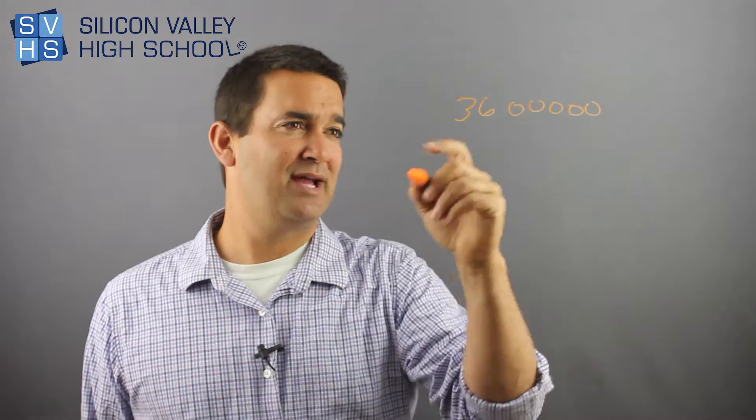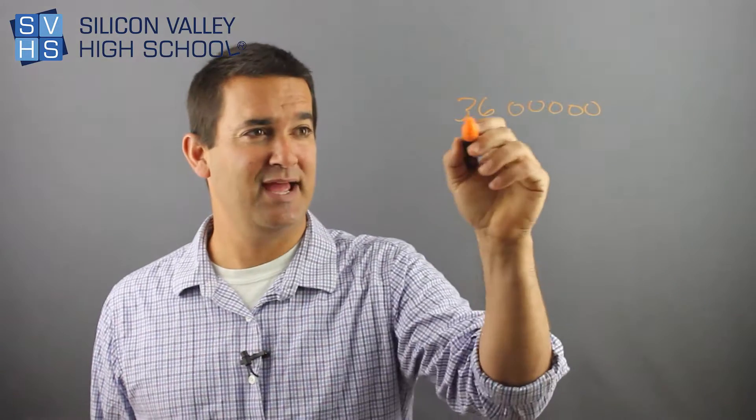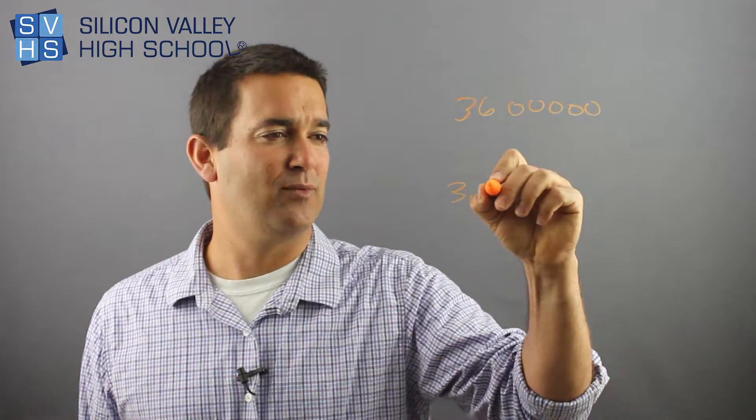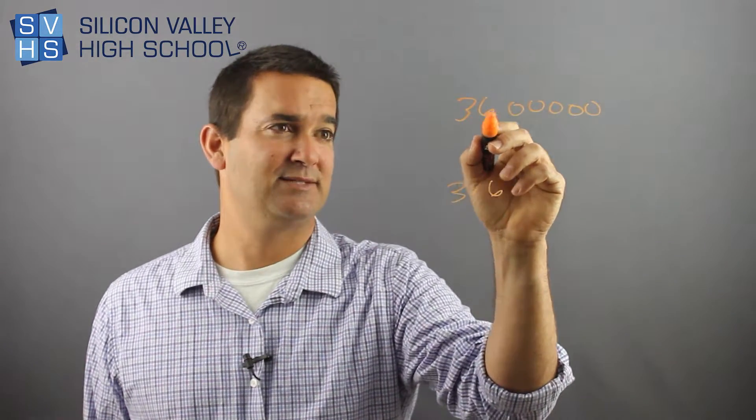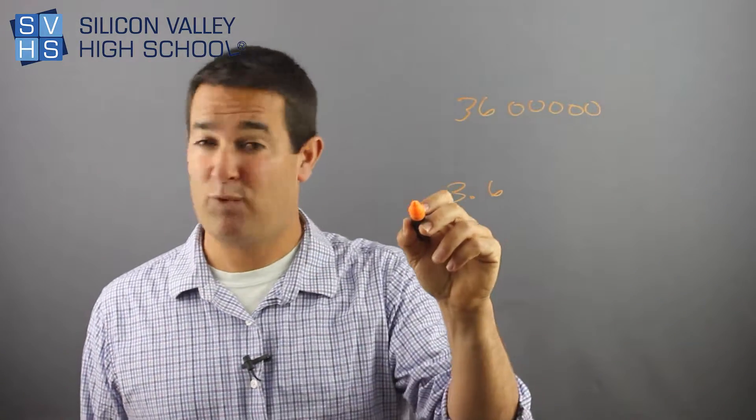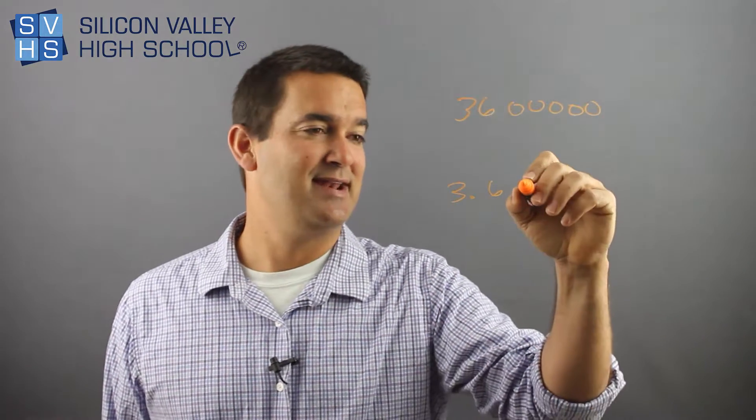What you don't do is count the zeros. That's a total myth. You take the numbers that are not zeros, and you write them in the form with the decimal. Done. I have a whole number, decimal, and then the 6. It's not .36. It's not 36. It's 3.6.